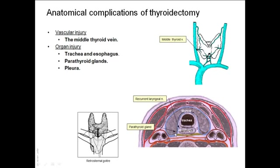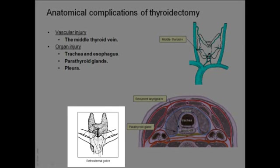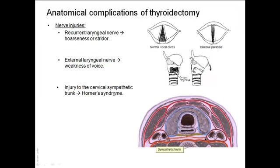Injury of the parathyroid gland is a concern; the surgeon should find at least one of the four parathyroid glands and try to preserve it to maintain parathyroid function. Injury of the pleura is likely in cases of a big goiter extending into the superior mediastinum — a retrosternal goiter.